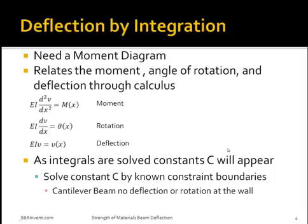To find out what these constant c's are, you need to know the constraints due to the boundary conditions placed on the beam. For example, a cantilever beam would have no deflection or rotation at the wall. So you could set your rotation and your deflection equation equal to 0 while also setting x equal to 0, if that is where you're starting to take your length.